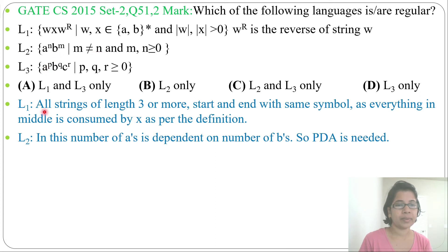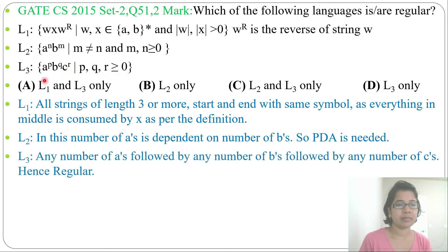Next language: a^p b^q c^r, where p, q, r greater than or equal to 0. This is nothing but any number of a's followed by any number of b's followed by any number of c's. This is regular. Here you don't need to compare number of a's with number of b's and number of c's. It is regular.